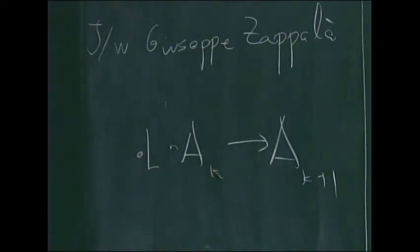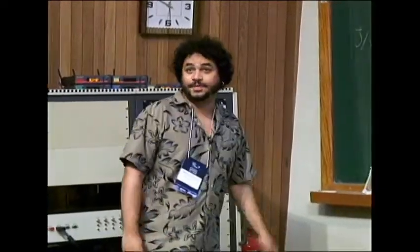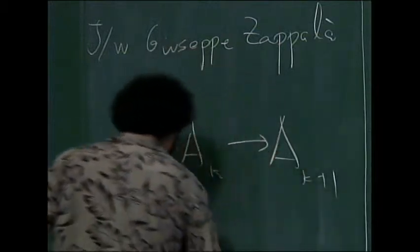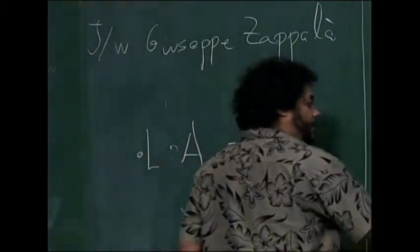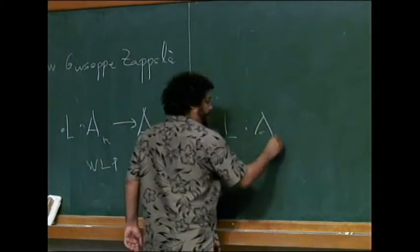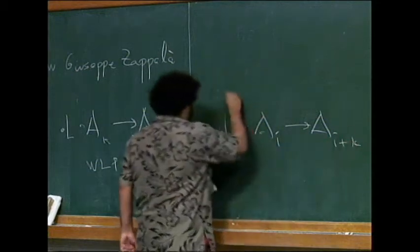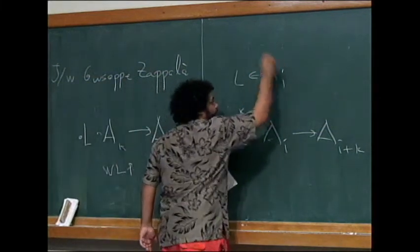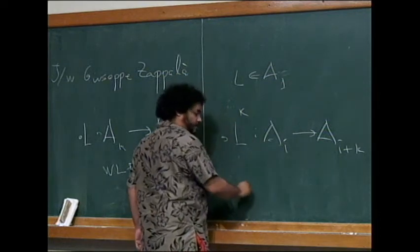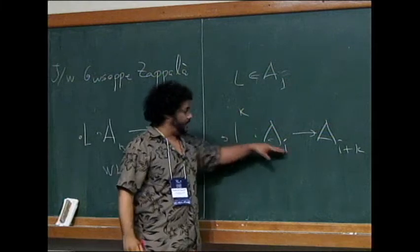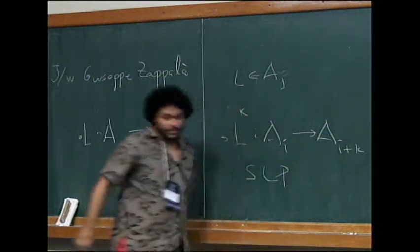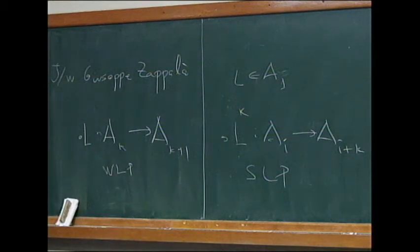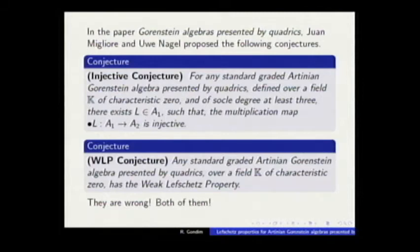The second conjecture states that there exists such an L that all the multiplications from A_K to A_{K+1} are of maximal rank for all K. This is called weak Lefschetz property. The strong Lefschetz property is that any multiplication from A_I to A_{I+K} has maximal rank for all K and I. They are wrong, both of them, and I will construct a series of counterexamples from a combinatorial point of view.